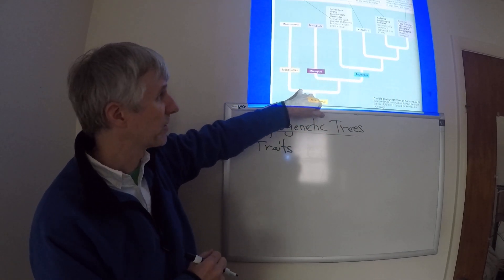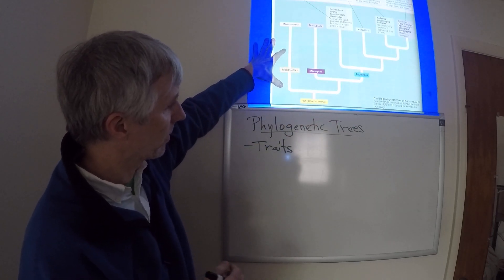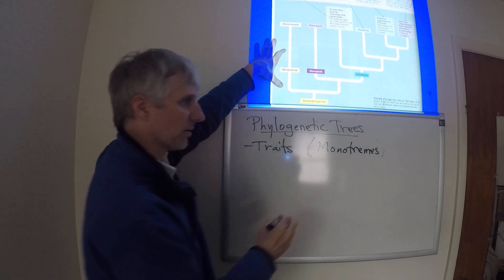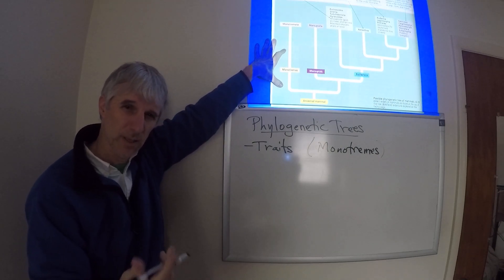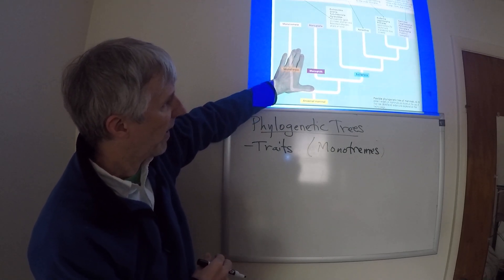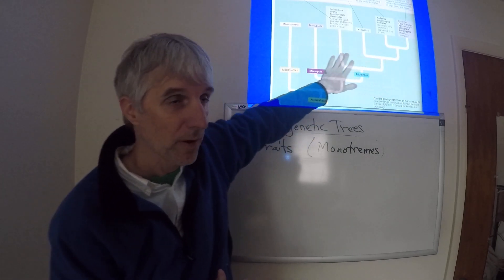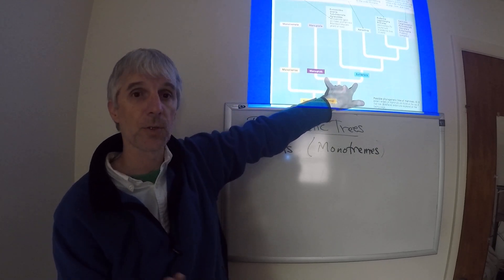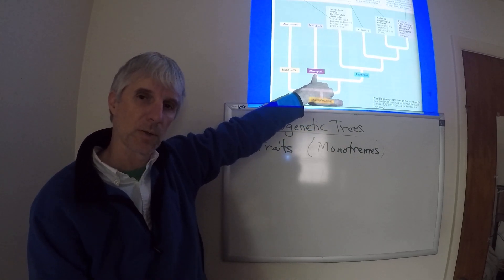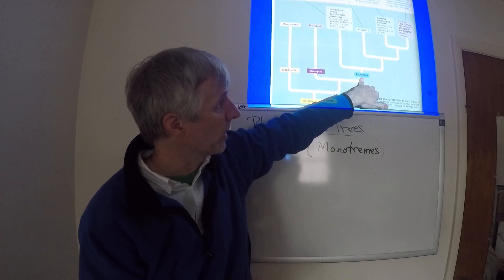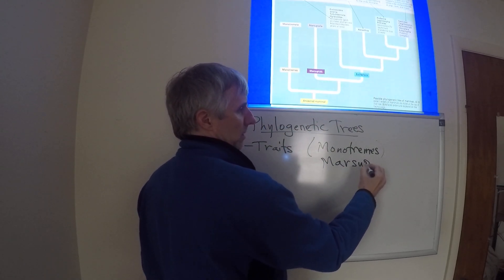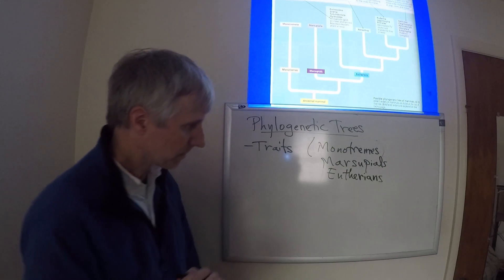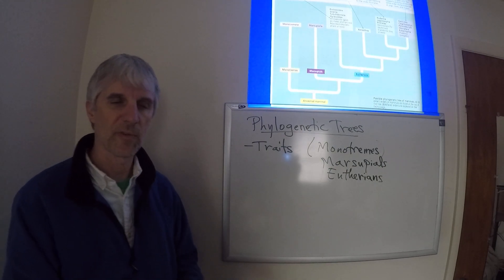When you start to group the mammals by traits, one group here called the monotremes, these are the egg-laying mammals, spiny anteater, duckbill platypus. The fact that they lay eggs rather than have live birth gets them placed off to the side as less related to these other two main groups. One of those groups being the marsupials, and the other group here called the eutherians. The eutherians, that's just another term for the placental mammals.